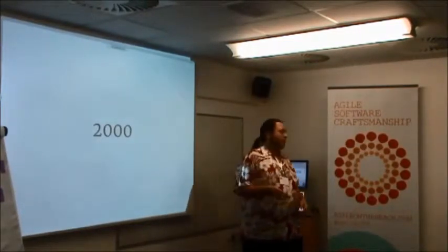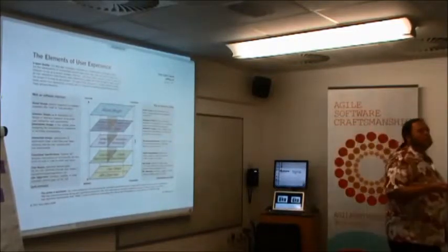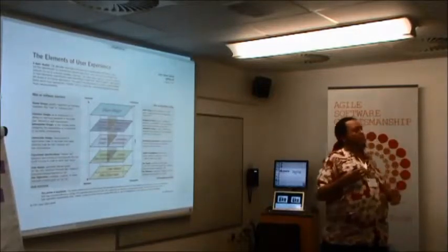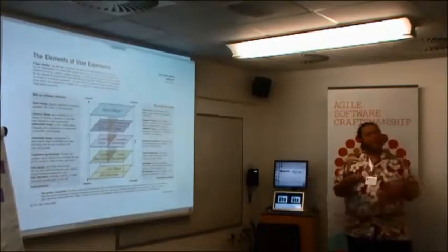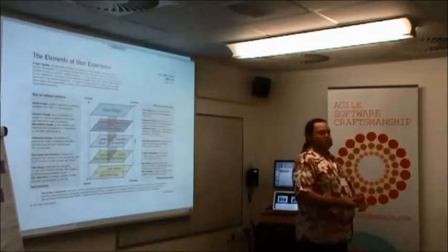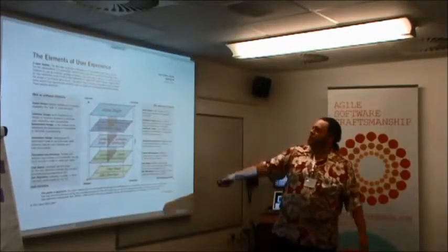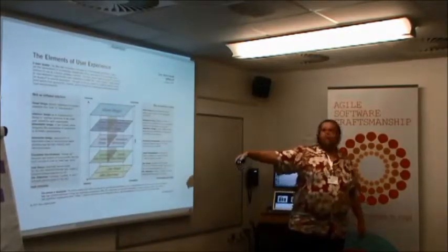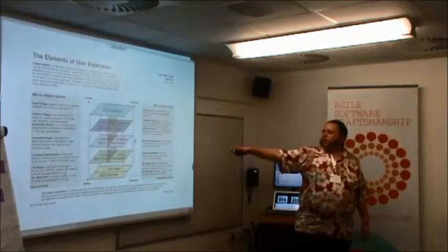A bit later on, around 2000, you had Jesse James Garrett, who drew this diagram — which the UX people in the audience would have seen a tedious number of times before. He started talking about the elements that go into building a good user experience. So here, user experience is much more a term around the ideal that you're aiming for. He divided it into two sides: web as software and web as content — very abstract at the bottom to very concrete at the top.